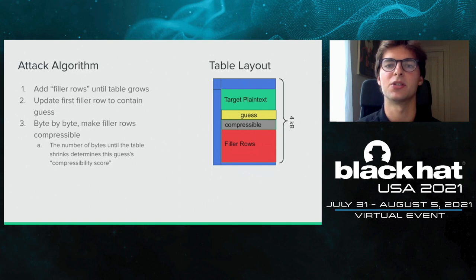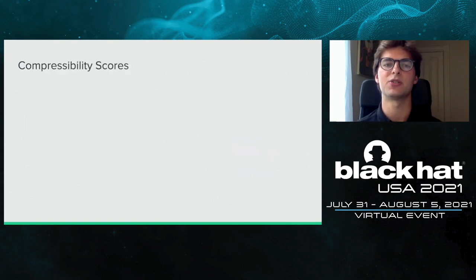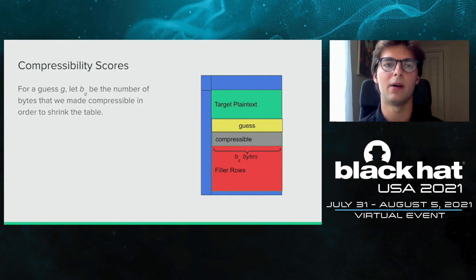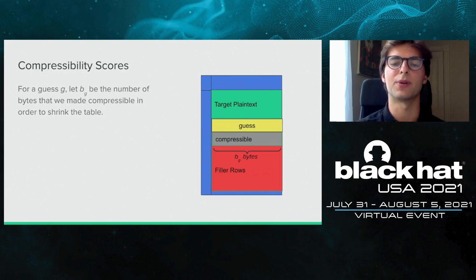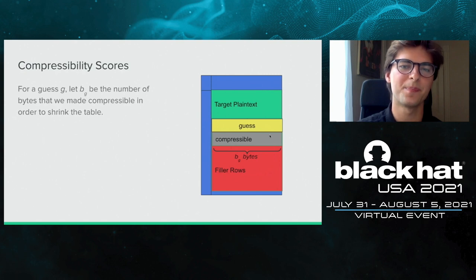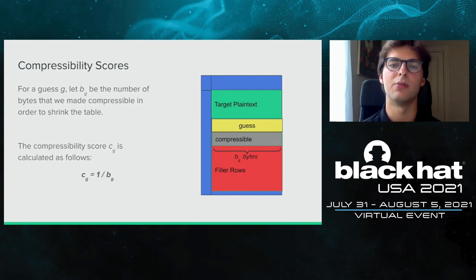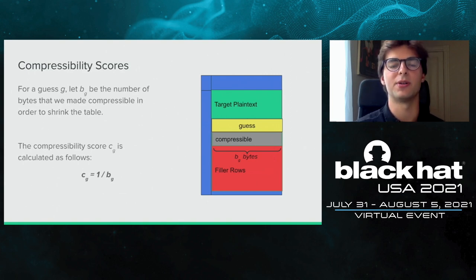A guess that results in a more compressible table layout — because it's repeated from the target plaintext — should have a higher compressibility score. We calculate this by defining BG, for a guess G, as the number of bytes made compressible in order to shrink the table. The compressibility score CG is then 1/BG. If a guess was very compressible with the target plaintext, it would take fewer bytes to shrink the table and the score will be higher. If it did not compress, it takes more bytes and the score is lower.